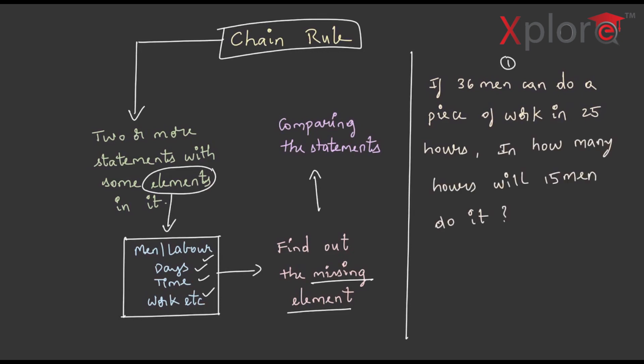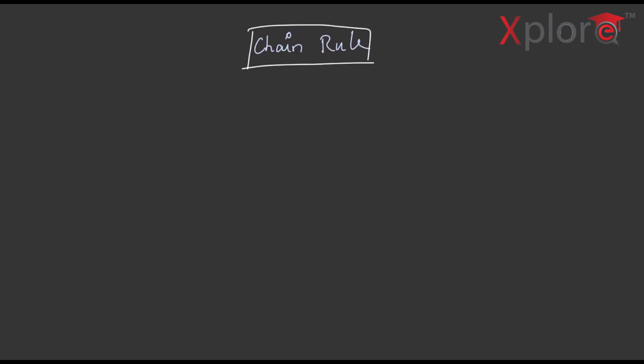Here we can find two statements and there are certain elements like men, hours in this question. We have to find the missing element that is hours in this case. In order to get this value, we will have to compare the two statements given in the question. We will have a clear picture when we solve the problems. Now, let us understand the concept of directly proportional and indirectly proportional which is significantly important in solving the problems in chain rule.